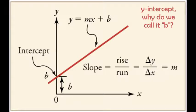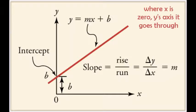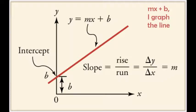Why intercept? Why do we call it b? Cause the real world begins there too, where x is zero, y's axis it goes through, mx plus b, I graph the line.